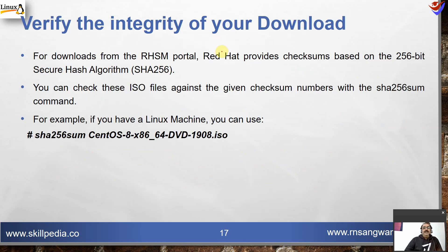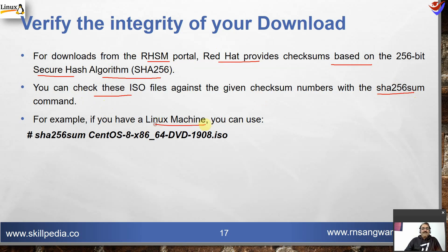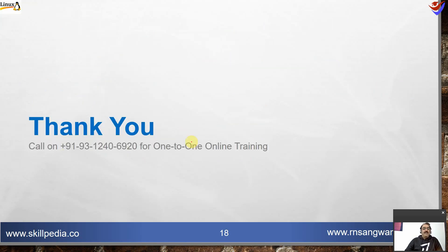Verify the integrity of your download: for downloads from the RHSM portal, Red Hat provides a checksum based on the 256-bit secure hash algorithm. You can check ISO files against the given checksum numbers using the sha256sum command — for example, sha256sum followed by the name of the ISO file. That's all for this session. Thank you so much for watching. Bye-bye.